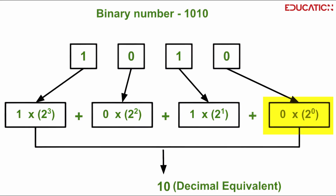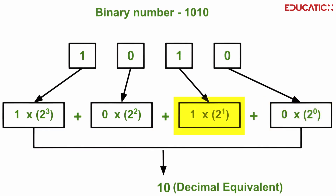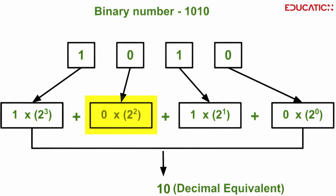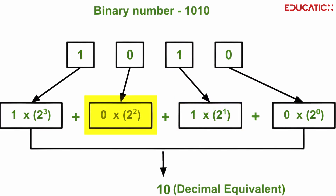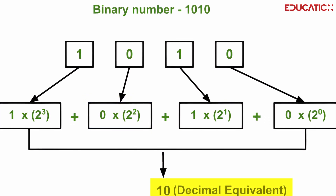The rightmost digit, 0, represents 2 to the power 0, which is 1. The next digit, 1, represents 2 to the power 1, which is 2. The third digit, 0, represents 2 to the power 2, which is 4. So, the binary number 1010 represents the decimal number 10.